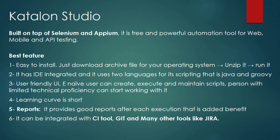Hello everyone. In this tutorial we are going to talk about Catalon Studio. Catalon Studio is a free and powerful automation tool written on top of Selenium and Appium. As we all know, Selenium and Appium are quite popular for the automation of web and mobile apps. Along with this, Catalon Studio has blended one more feature to automate APIs, either written in SOAP or REST protocol.